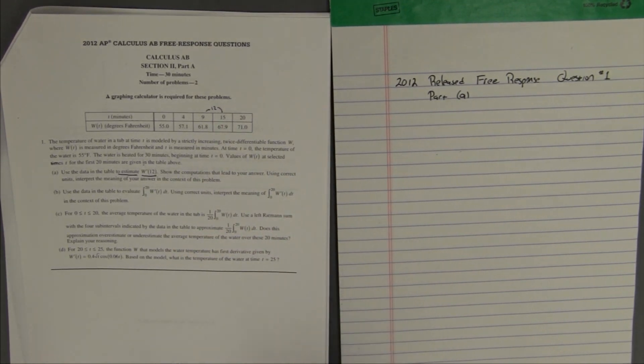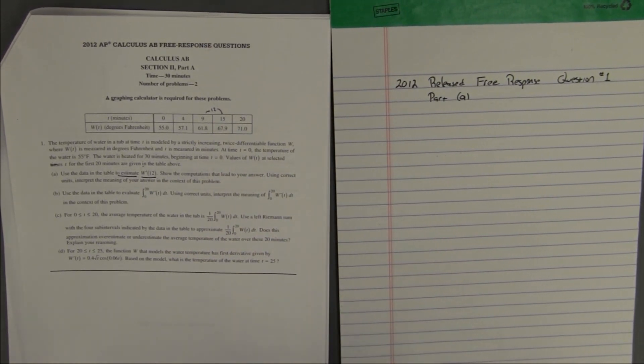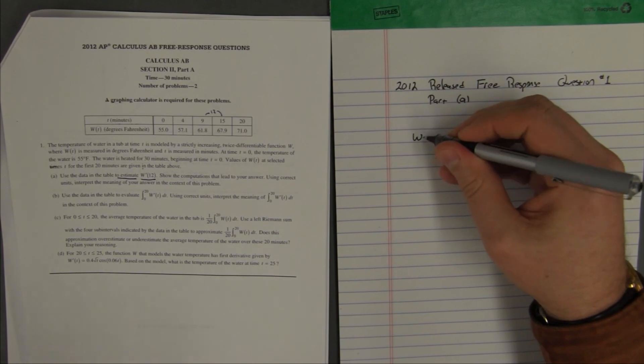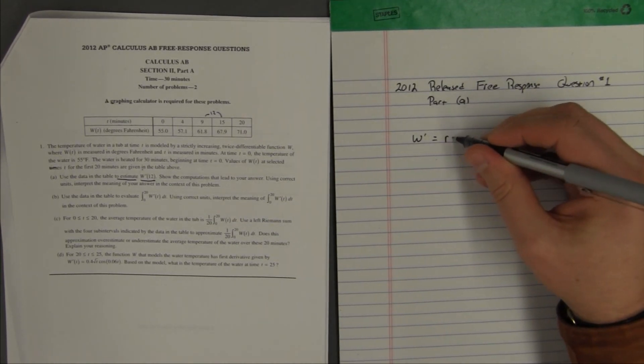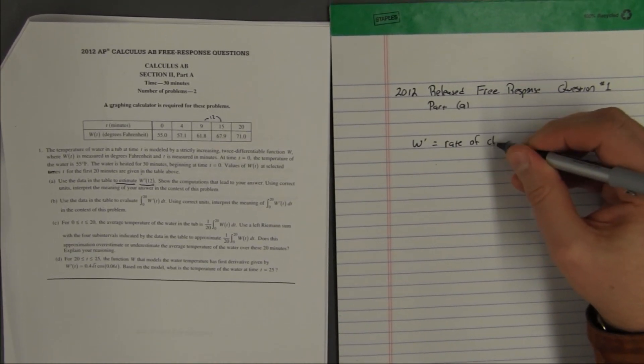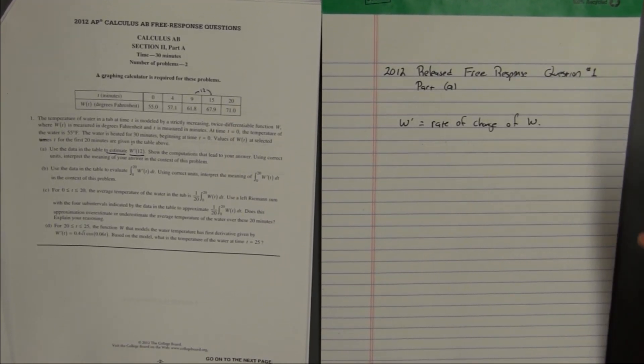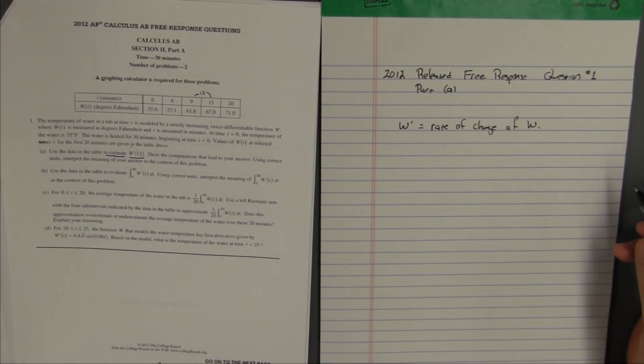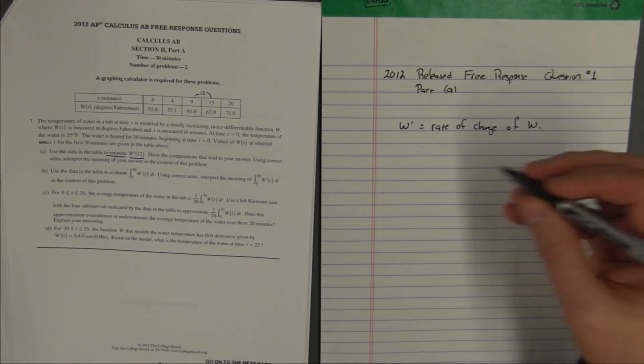So w prime is a rate of change. W prime, its meaning is the rate of change of w.